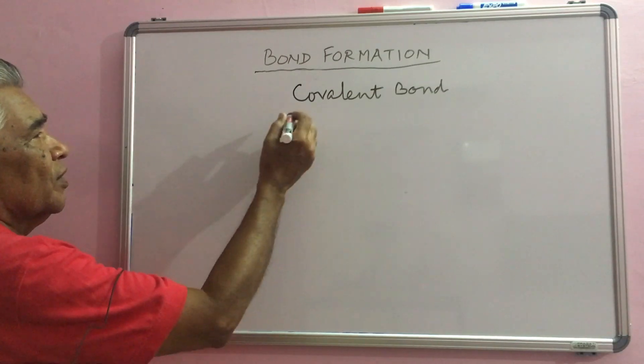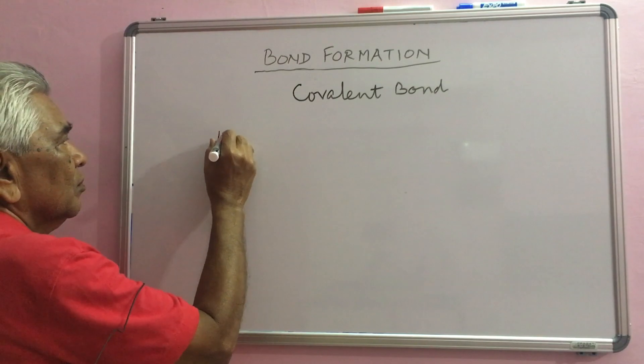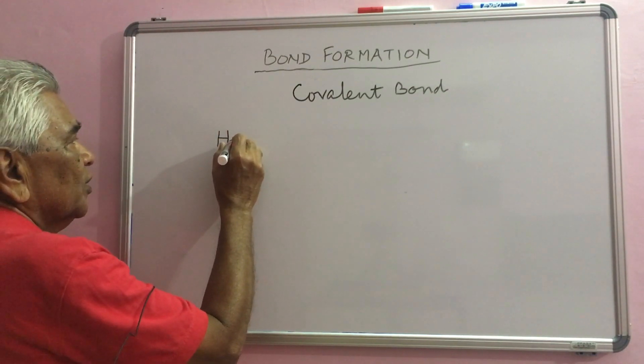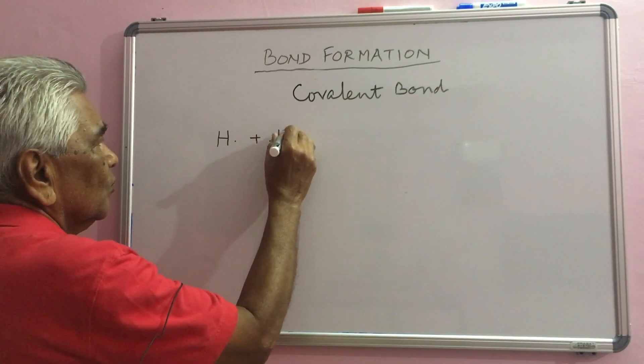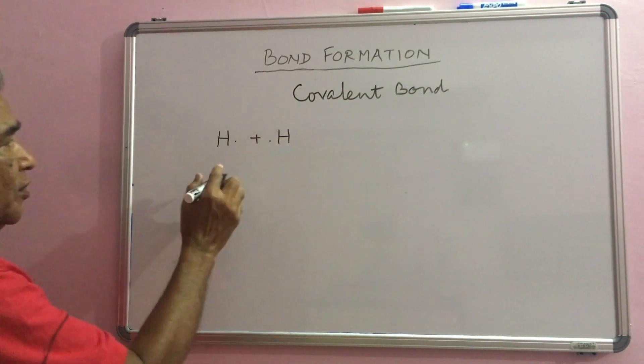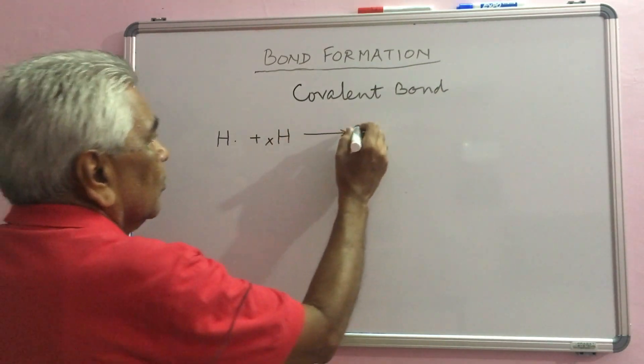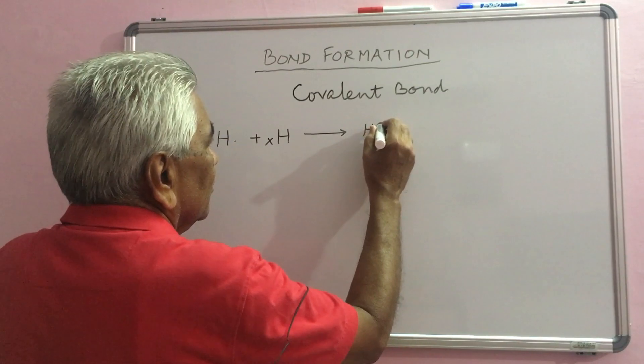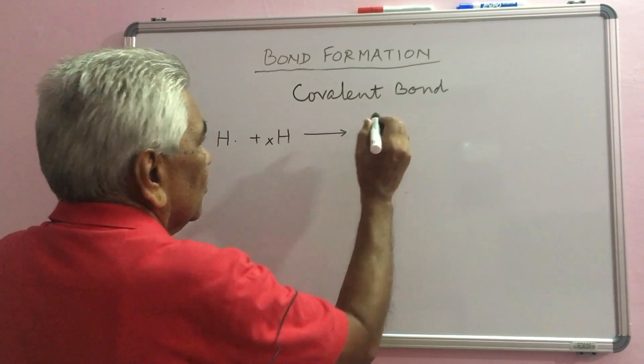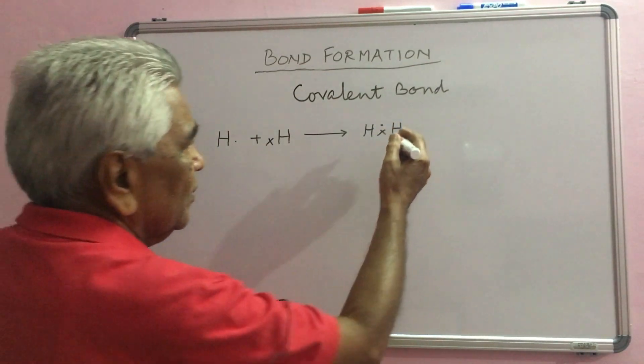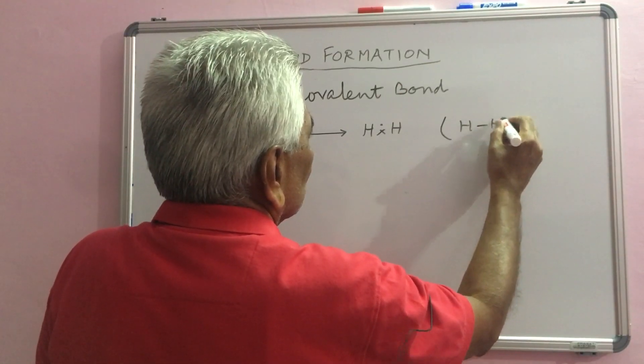If you take hydrogen molecule formation, hydrogen has one electron. When this forms bond with another hydrogen atom, we get this hydrogen molecule. For simplicity, we write it as HH, so this is a covalent bond.